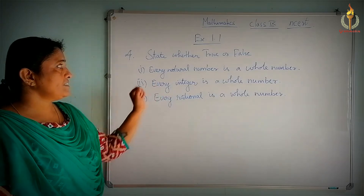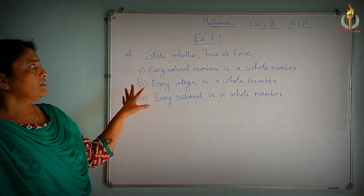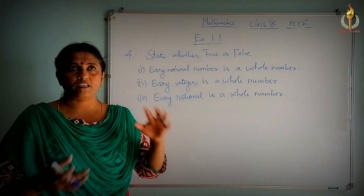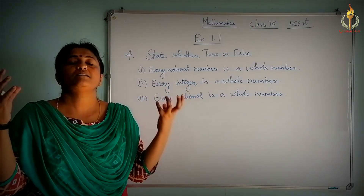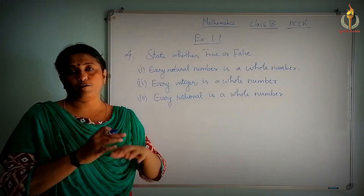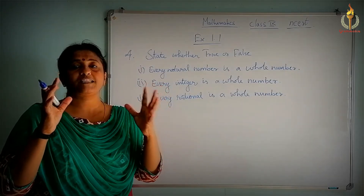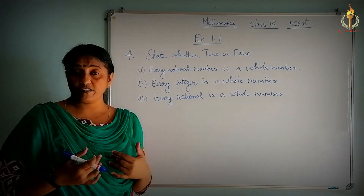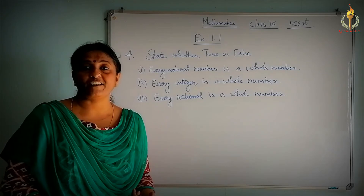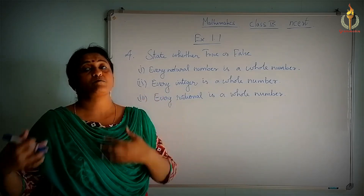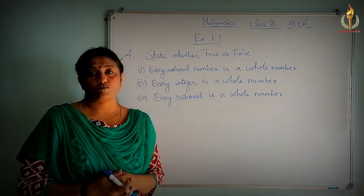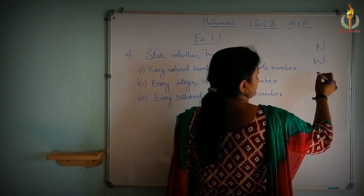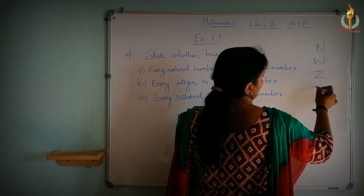Moving on to the fourth question — it's a true/false question. Every natural number is a whole number. Whenever you see this, the number line should come into your mind. The first set of numbers we studied was natural numbers, then comes whole numbers with 0, then comes integers with positive and negative integers, then comes rational numbers. The order will be: N, then W, then Z, then Q. You should remember that.